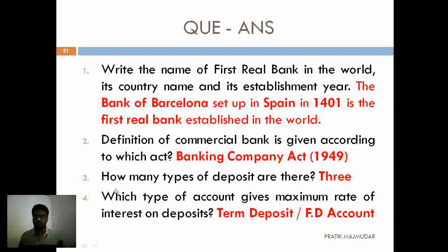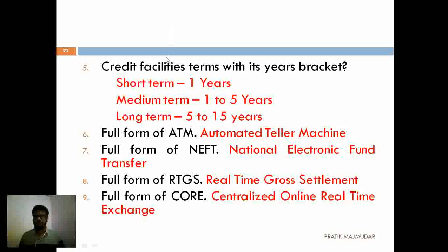Question 4 was: which type of account gives the maximum rate of interest on deposits? The answer is term deposit or fixed deposit accounts, which give the highest rate of interest. Question 5 was about credit facility terms with their duration brackets. There are three types: short term — less than one year; medium term — one to five years; and long term — five years or more.